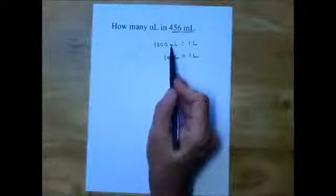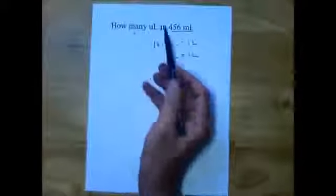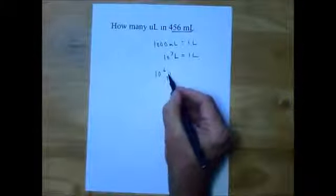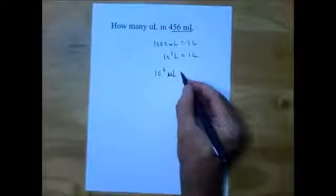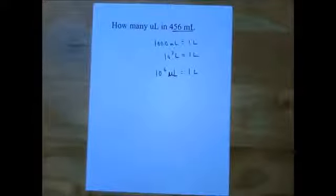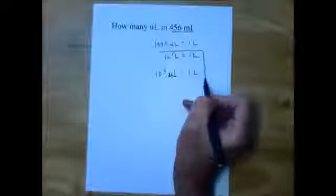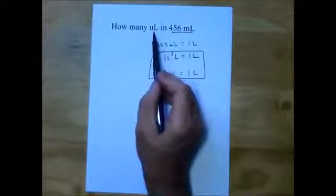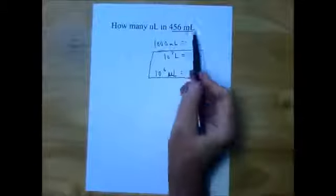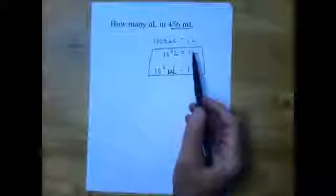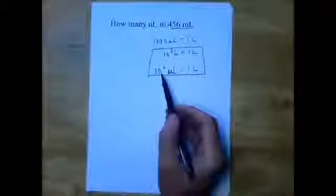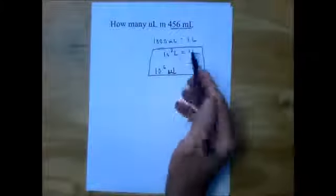Liters is the base unit, milli is the prefix. For microliters, ten to the sixth microliters equals 1 liter. So we have two relationships we can use. It's very difficult to remember off the top of your head how to go directly from milliliters to microliters — this is the way to do it. Find the base unit for each one. For milliliters: 1,000 milliliters equals a liter. For microliters: ten to the sixth microliters equals one liter. Now we have something common to chain together.